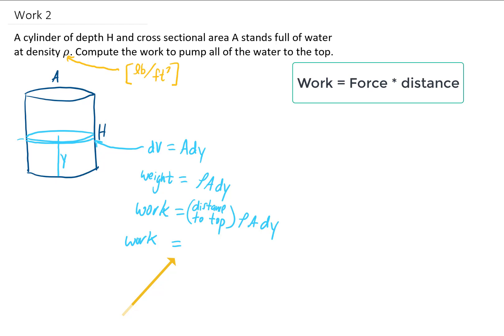then the work needed to take this little tiny slice of water up to the top of the tank is going to be the height of the tank, whatever that height is, minus the y value, the height where the water is at that moment, times rho times A times dy.